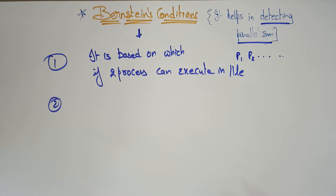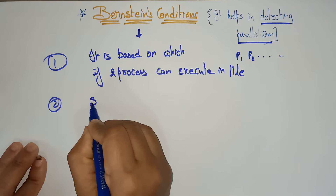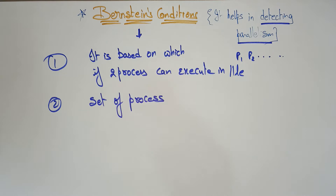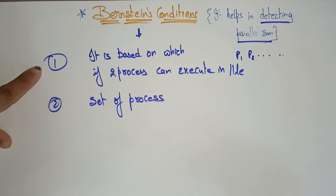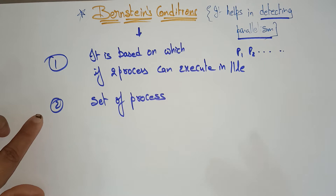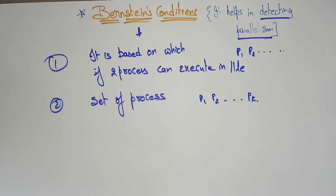Bernstein condition two explains everything in terms of data dependency. Here we are taking a set of processes. So there are two types of Bernstein's conditions: one checks whether two processes are executing in parallel, and the second works on a set of processes like P1, P2, P3 and so on up to Pk.